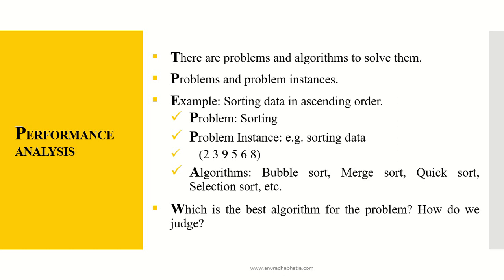Problem instances — sorting of data. If we have the numbers 2, 3, 9, 5, 6, and 8, we need to sort them out. There are various algorithms for sorting these numbers. The basic ones are bubble sort, merge sort, quick sort, and selection sort. What is the best algorithm for the problem and how do we judge it? That is what performance analysis is used for — analyzing the performance of any algorithm.